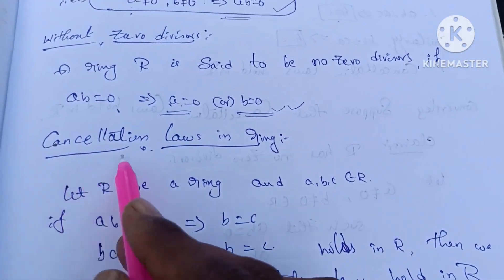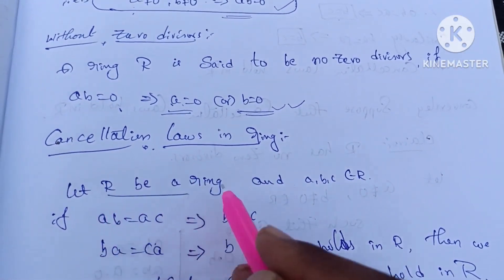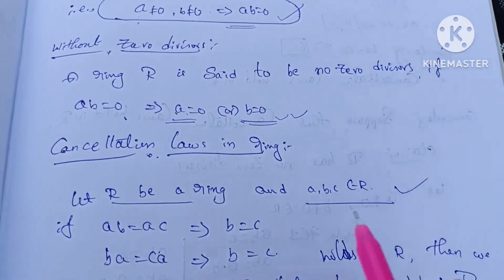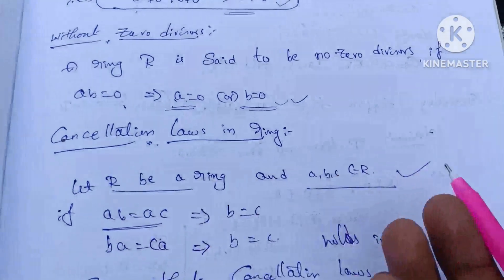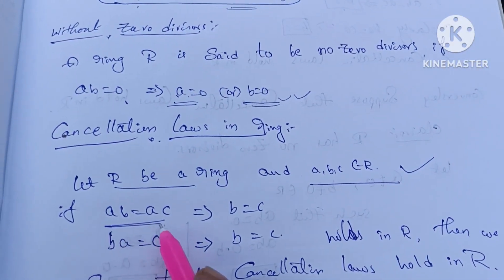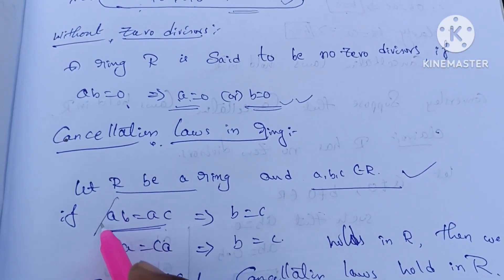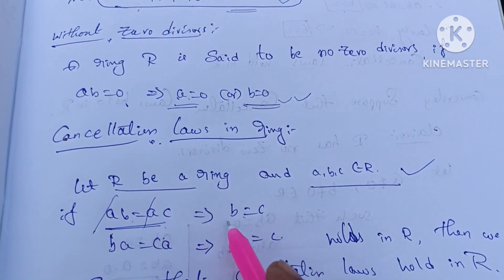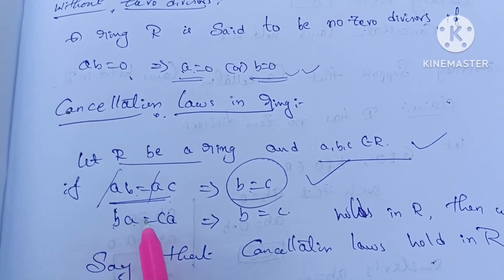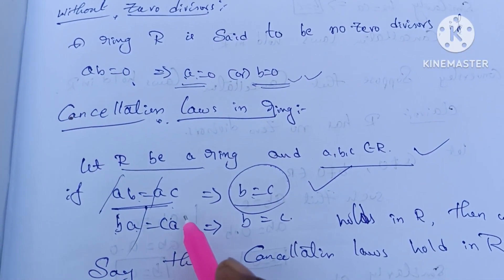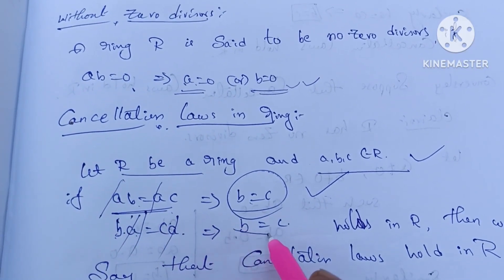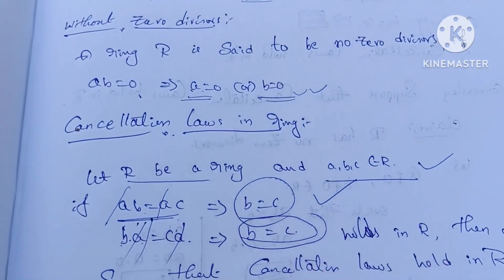Let R be a ring and A, B, C belong to R. These three elements — if AB is equal to AC, this condition is not possible without cancellation. If AB equals AC, then by the left cancellation law, cancelling A gives B equal to C. If AB equals AC, then B equals C; cancelling A gives B equals C. Then cancellation law holds.